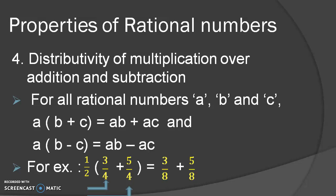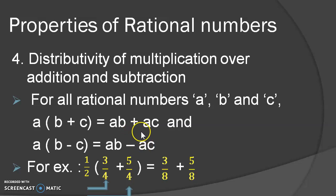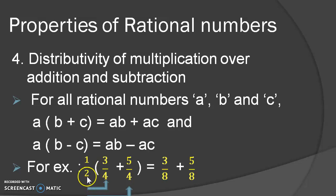Let's proceed further. Next is the distributive property for multiplication over addition and subtraction. Consider three rational numbers A, B and C. Here A is multiplied with B and then A is multiplied by C. Both these products are then added. In simple words, we are distributing A to both the rational numbers B and C. It holds true for subtraction also. For example, 1 upon 2 is multiplied to 3 upon 4 first, and then multiplied to 5 upon 4, and the products are added.